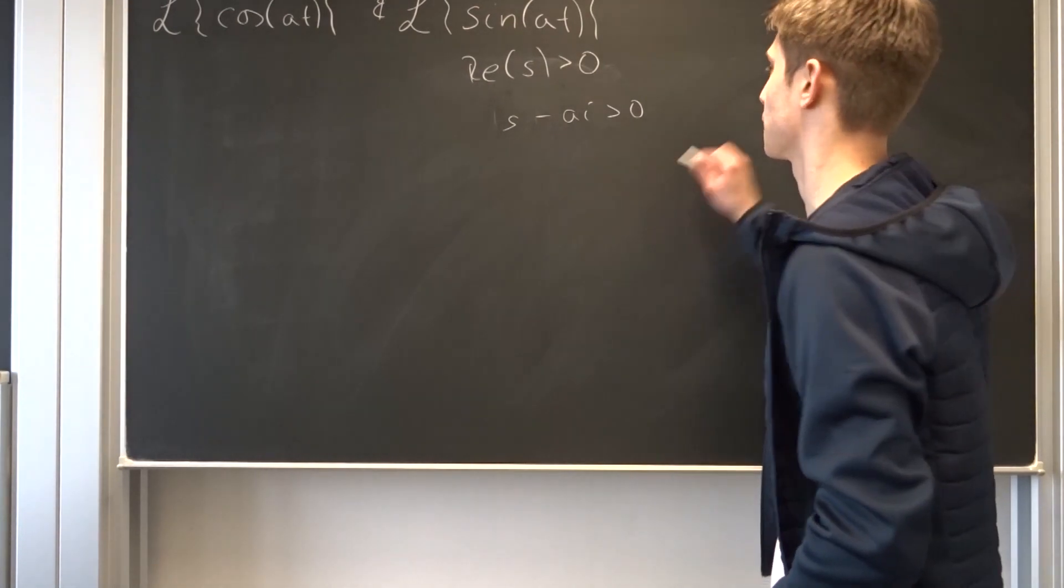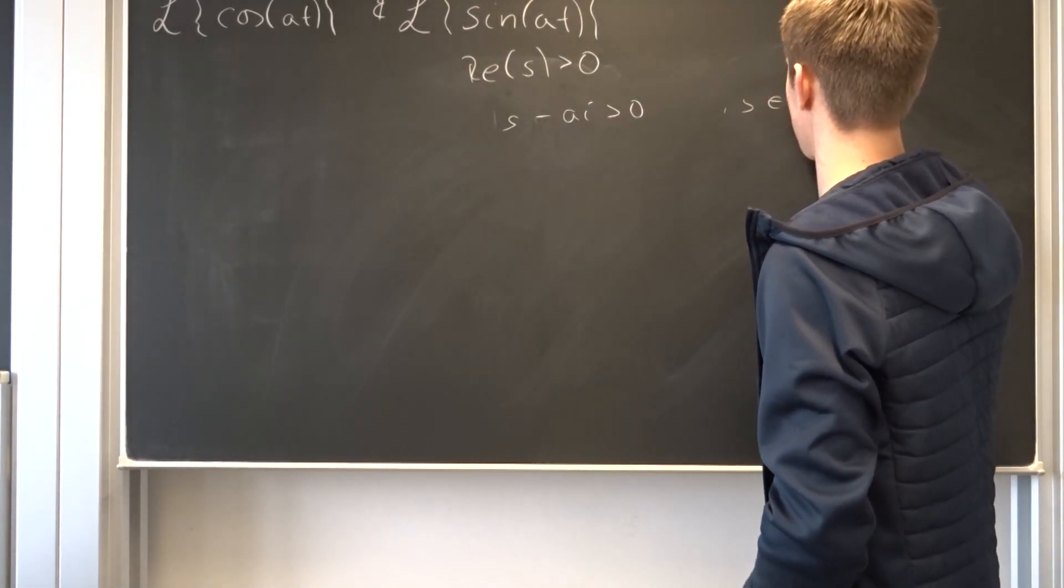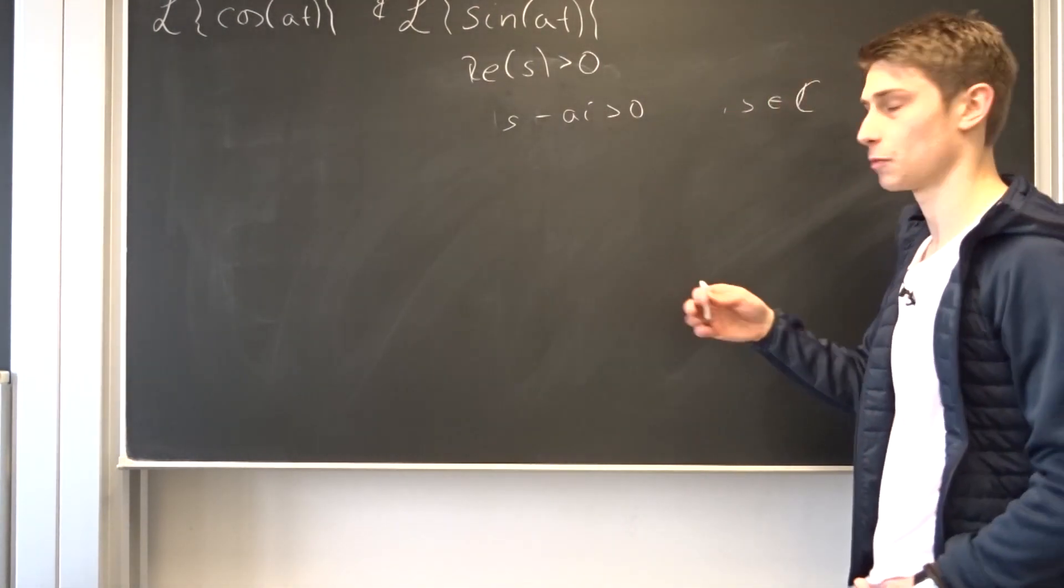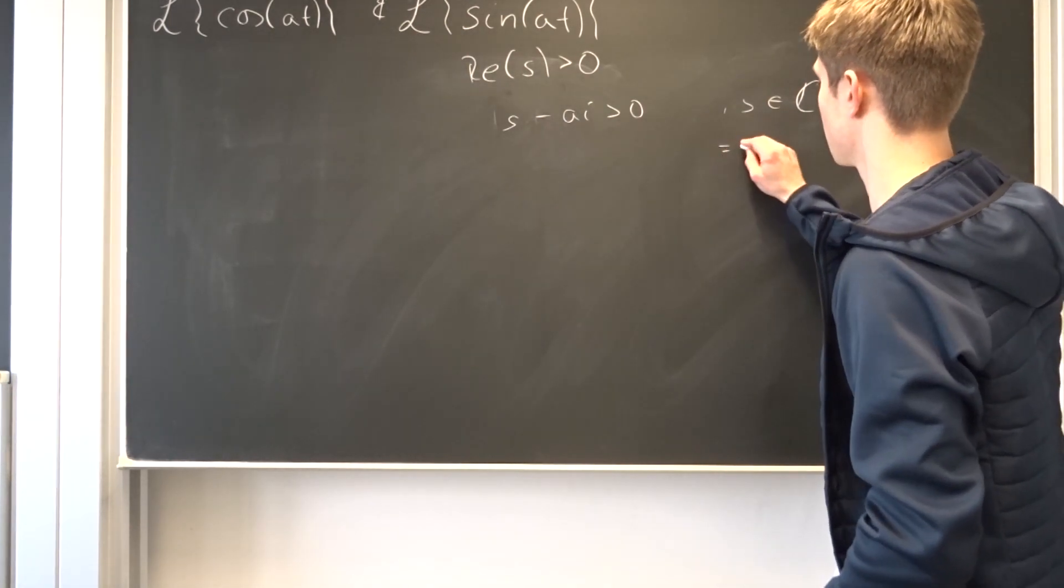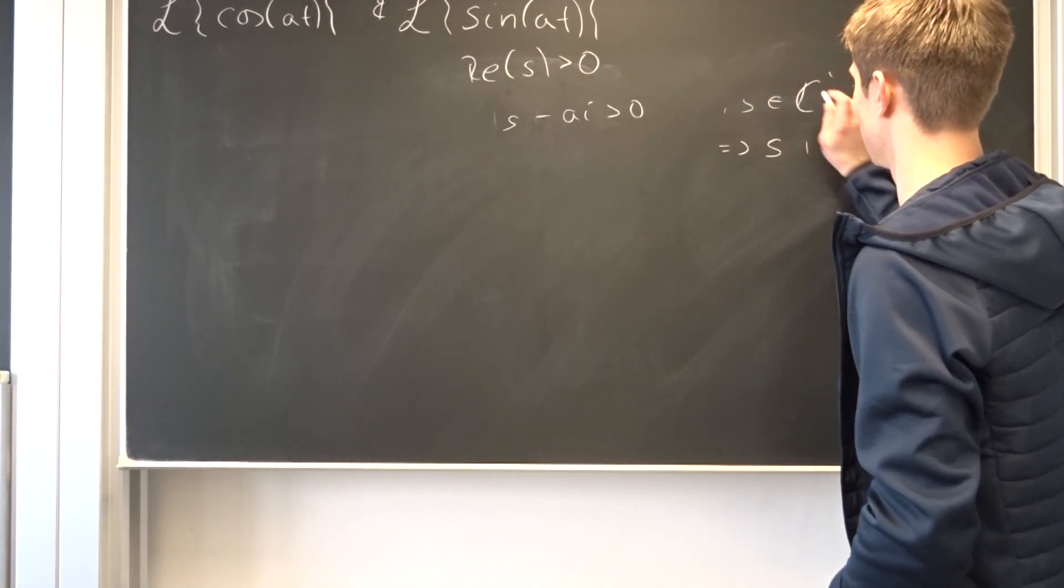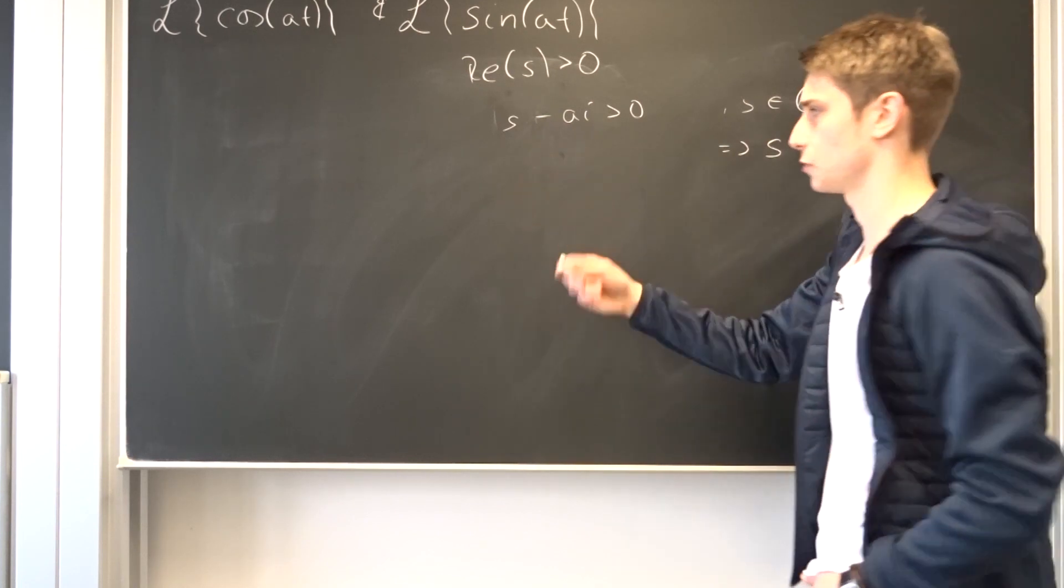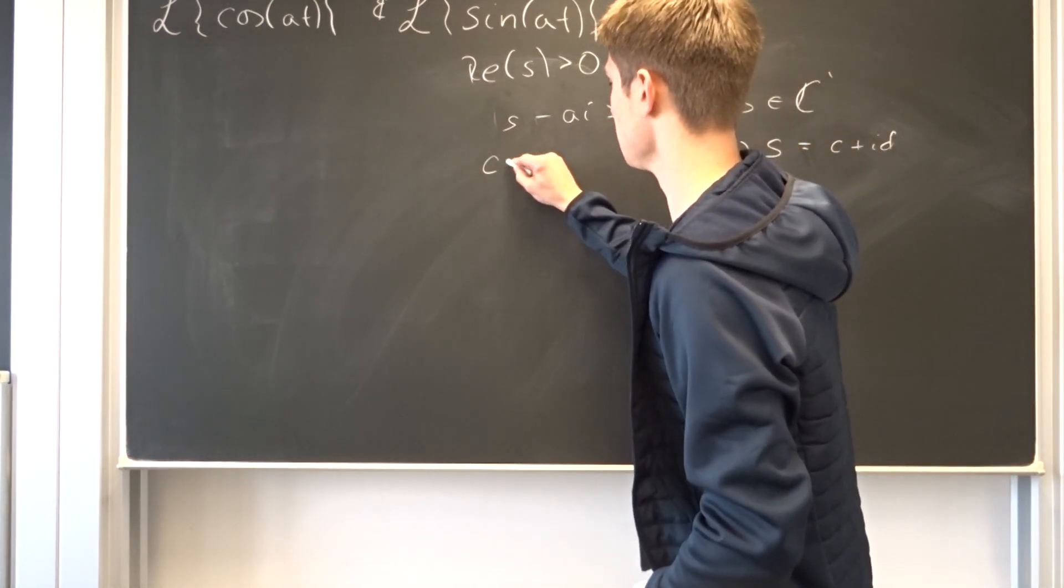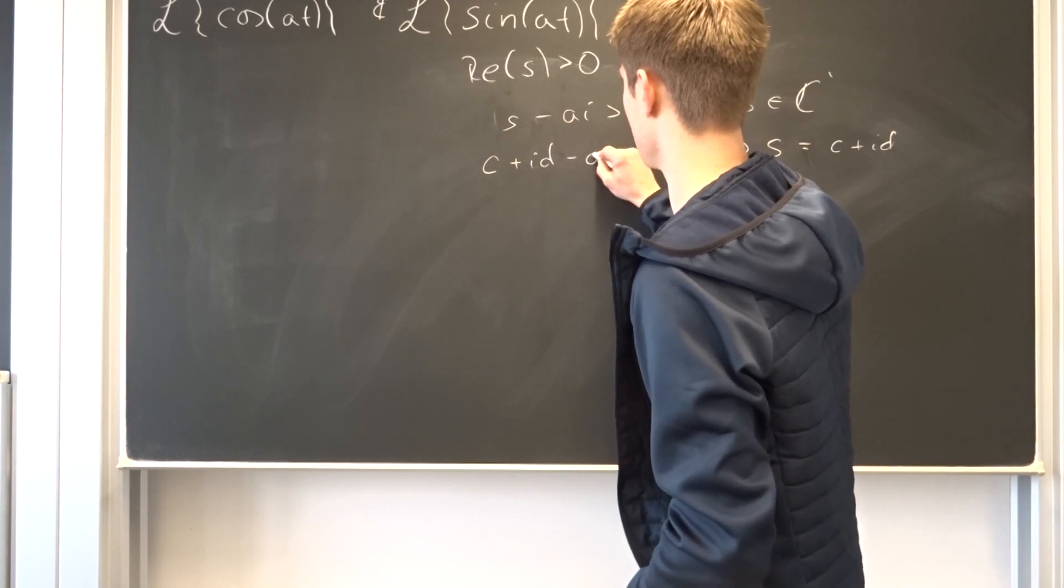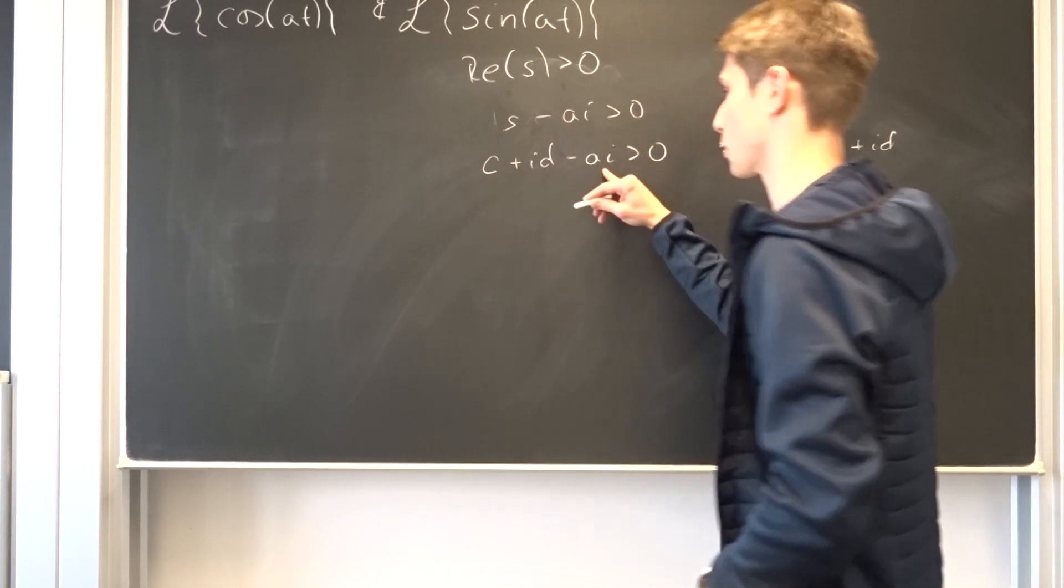And I wanted to remember that s is element of the complex numbers. And since it's element of the complex numbers, that means we can express s as let's say c plus i times d, then we can plug this information in. So this is c plus i times d minus i times a, and this has to be greater than zero.